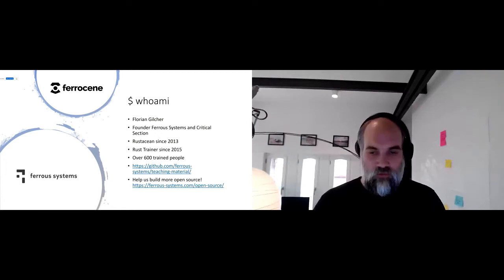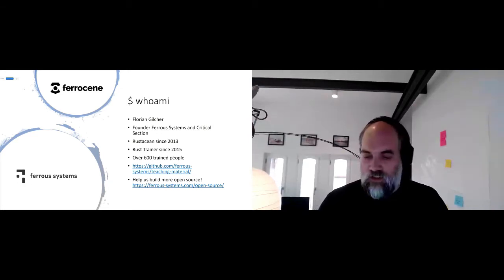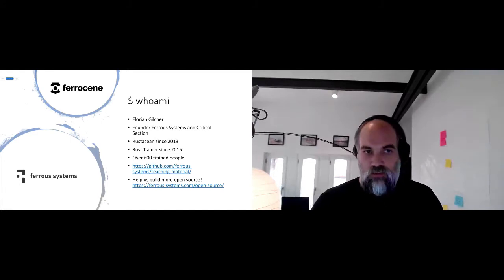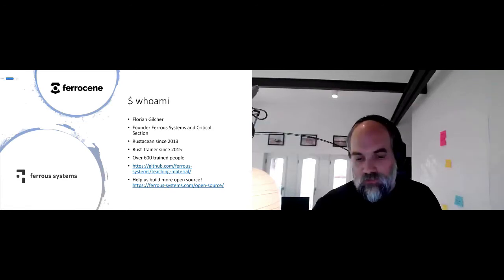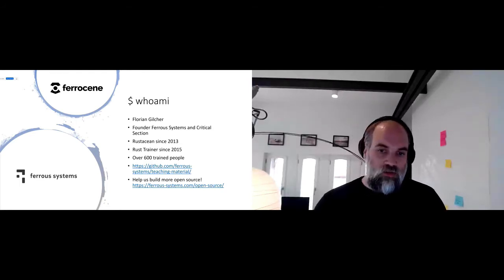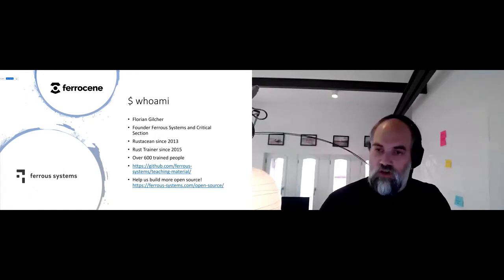All our teaching material is open source. I don't think that copyright on teaching material is a good forcing function. At Ferrous Systems we try to work as much as possible in open source, using new funding models. We propose tools to the ecosystem that we think are useful, making sure that sustainability is checked off first — because who wants to adopt a tool that goes out of maintenance in two years? We're also bringing Rust to safety-critical sectors through our subsidiary Critical Section, targeting Rust qualification around 2022–2023.